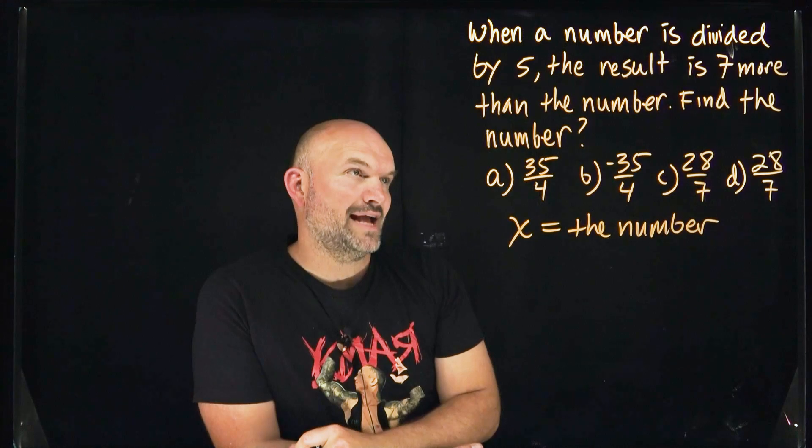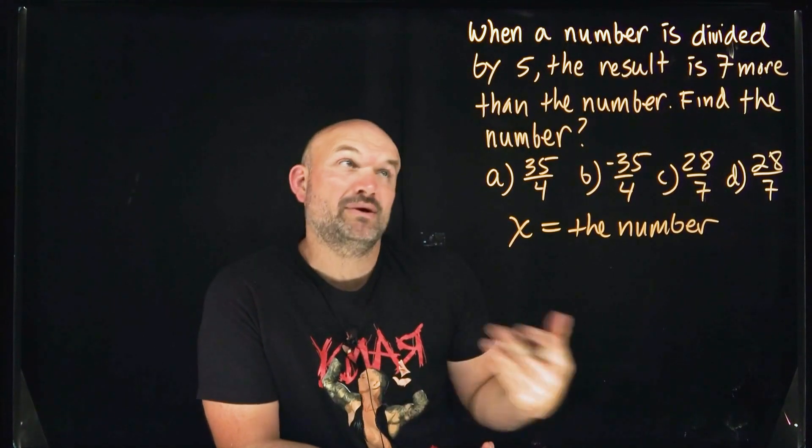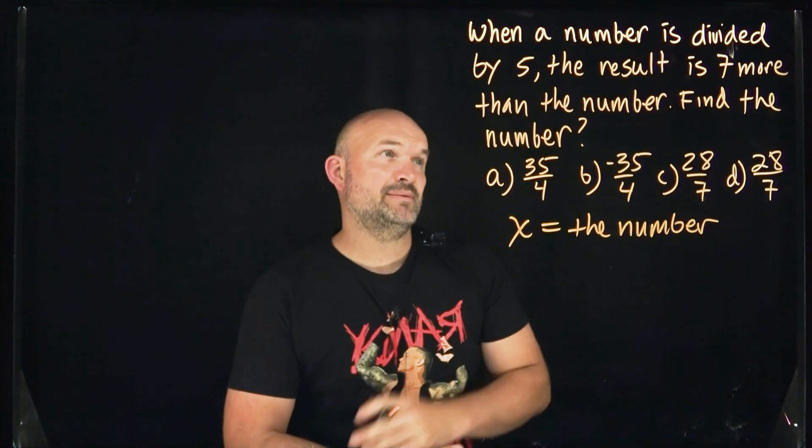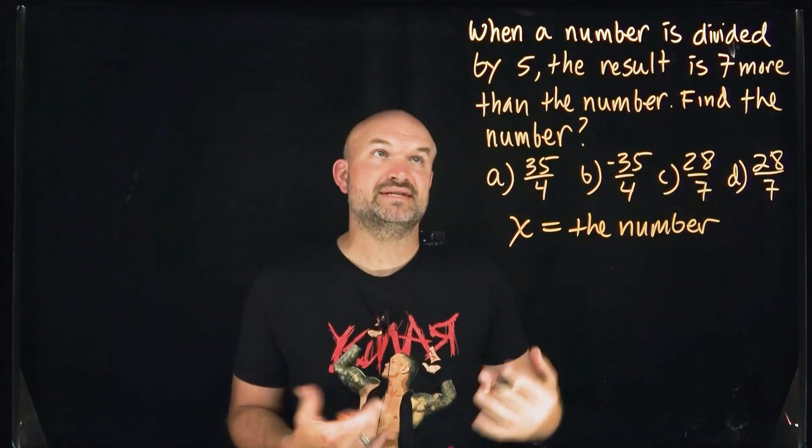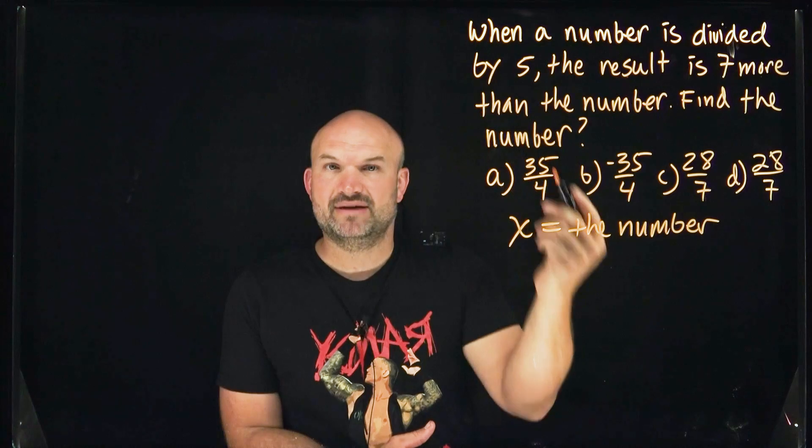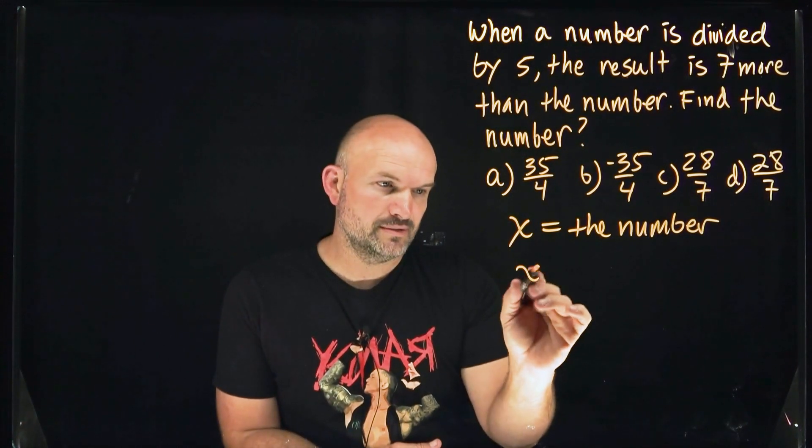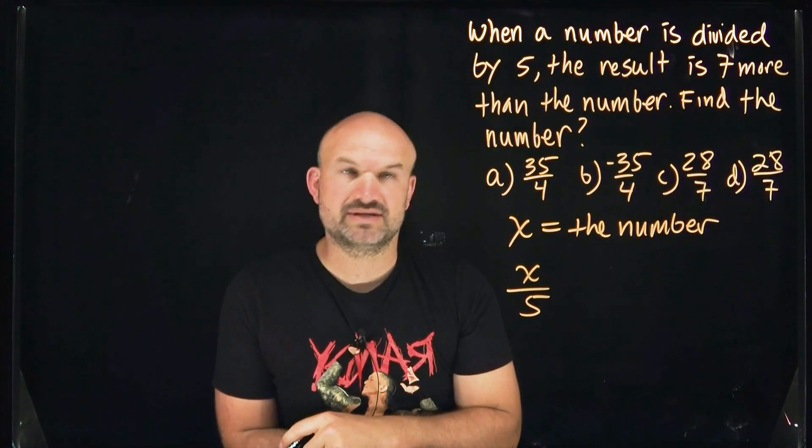All right, now we have a couple answer choices here. When we need to solve for X, we need to create an equation. So let's try to understand based on these words how we can represent that. So when a number is divided by five, obviously a number being divided by five is going to be represented like that.